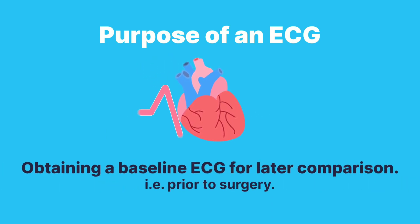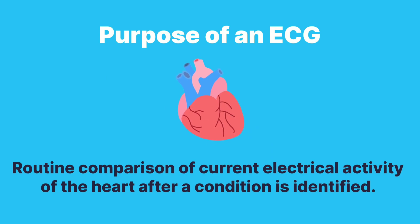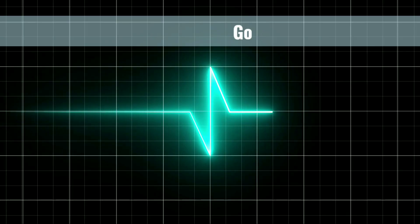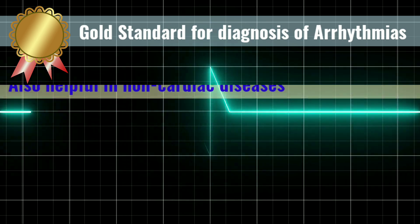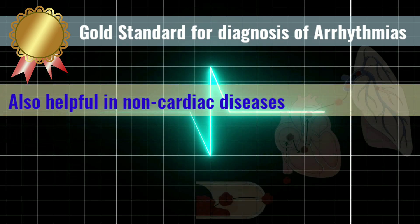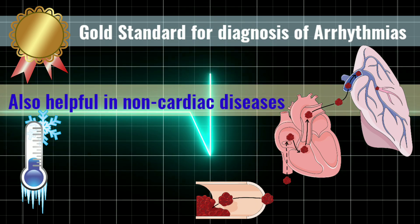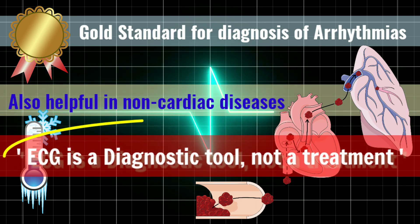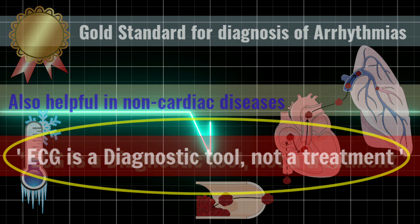Baseline ECG before surgery for later comparison, or for routine comparison of current electrical activity of the heart. After a condition is identified, it is the gold standard for diagnosis of cardiac arrhythmias, but it is also helpful with non-cardiac diseases, for example pulmonary embolism and hypothermia. However, it's important to note that ECG is a diagnostic tool, not a treatment.